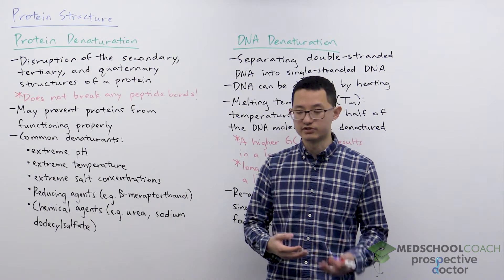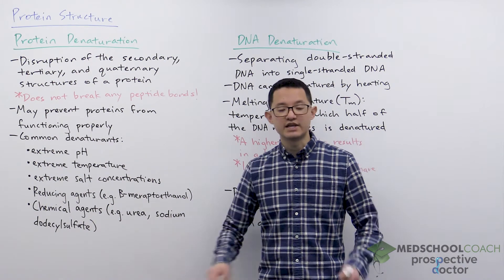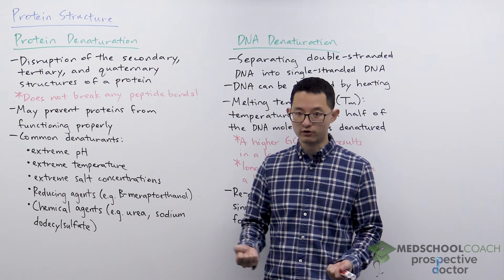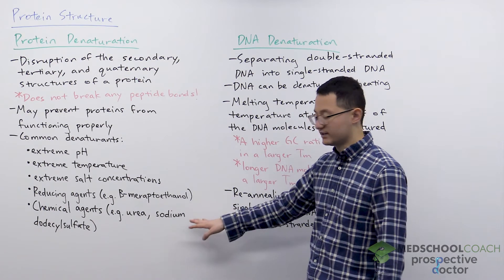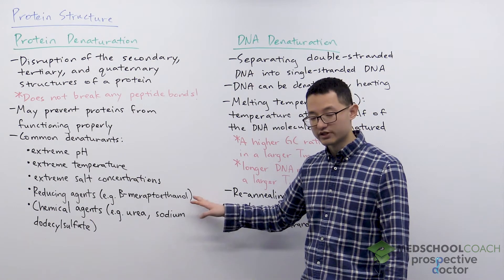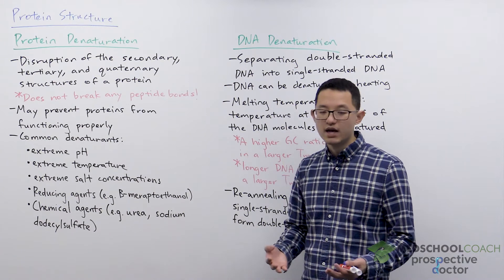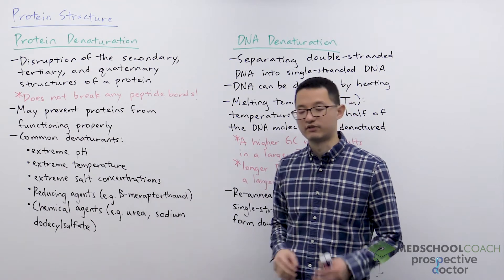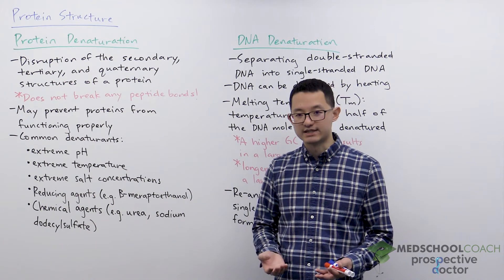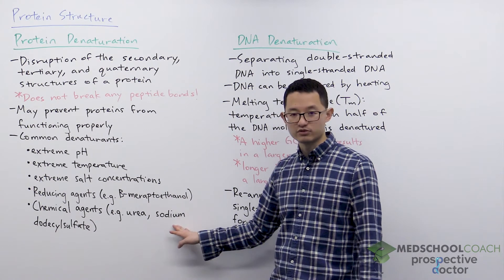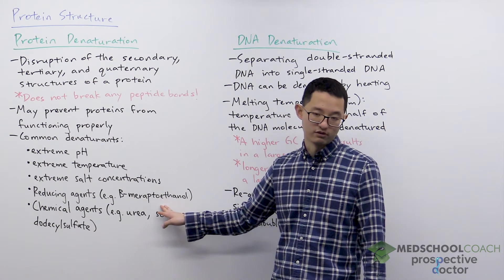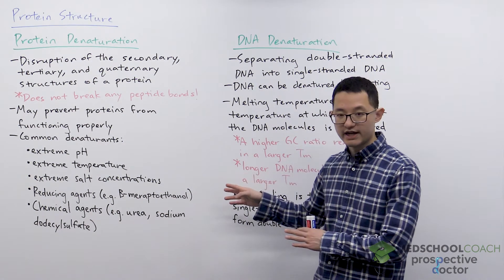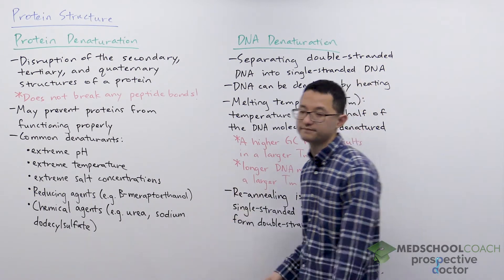Sodium dodecyl sulfate, also called SDS, is a detergent that is able to break and disrupt many of the interactions in proteins, causing them to unfold. You don't have to use just a single condition — any of these can denature a protein, but for complete denaturation, more than one is sometimes used. For example, in reducing SDS-PAGE, you use both sodium dodecyl sulfate and reducing conditions, usually through the addition of beta-mercaptoethanol.